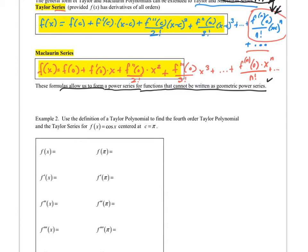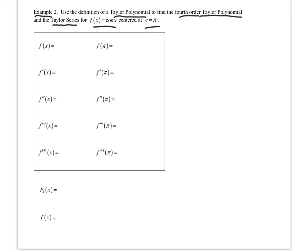Example two: use the definition of a Taylor polynomial to find the fourth order Taylor polynomial and the Taylor series for f of x equals cosine of x, centered at c equal to pi. I look at f of x equals cosine of x, then f prime of x equals negative sine of x, then negative cosine of x, then sine of x, then cosine of x again. Fourth order means I take the fourth derivative. We're centered at pi, not zero.